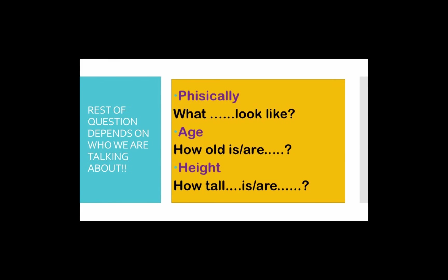When you want to know how someone is physically, we use 'what do they look like.' For age-related questions, we use 'how old.' For height, we use 'how tall.' The rest of the question will depend on who you're talking about.